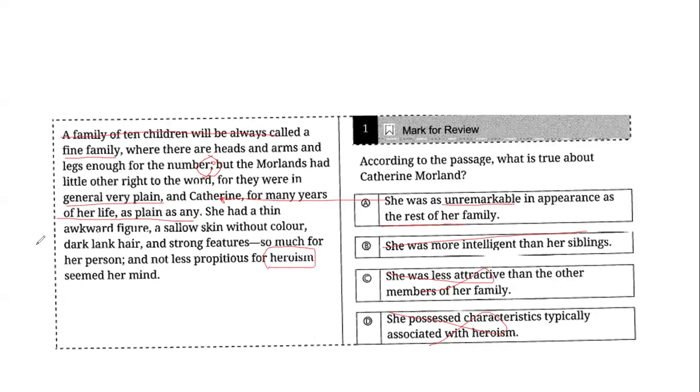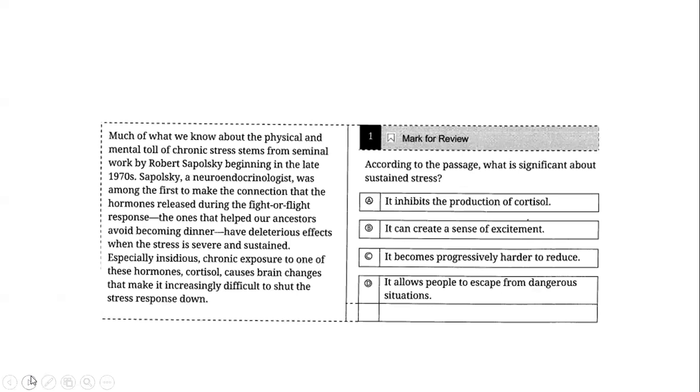She was less attractive than other members—not at all. They were not known for being attractive. She possessed characteristics typically associated with heroism. Just because the word—remember, if you find any particular word as it is, that is your wrong answer. If you find line by line, word by word in one of the options, it's going to be a wrong answer. Hence we are left with A. She was unremarkable in appearance. Unremarkable means not so great in appearance as the rest of her family. That's exactly what they're trying to tell us.